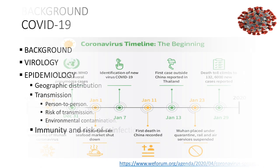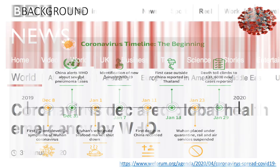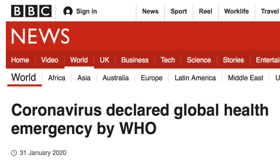Looking at the coronavirus timeline, on December 8th the first cases were recorded in Wuhan. On December 31st China alerted WHO about several pneumonia cases. On January 1st the Wuhan wholesale seafood market was shut down as the suspected source of infection. On January 7th a new virus was identified, and on January 11th the first death in China was recorded. On January 13th the first case outside China was reported in Thailand, and on January 23rd Wuhan was placed under quarantine.